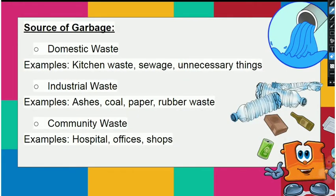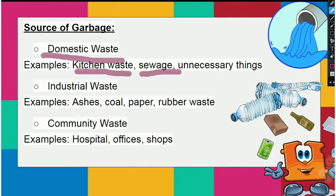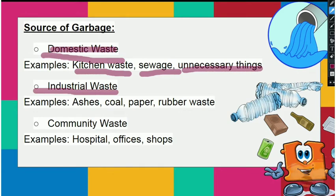Sources of garbage: What is garbage? The first source is domestic waste, which comes from the kitchen — kitchen waste, sewage, and unnecessary things. The second source is industrial waste, such as ashes, char, coal, paper, and rubber waste.